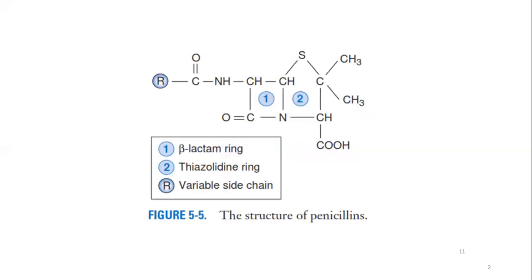This is the structure of penicillin. It consists of two rings: the first is the beta-lactam ring and the second is the thiazolidine ring. The R chain is basically the variable side chain. This chain is modified by microbiologists and scientists, and because of this modification they give different varieties of activities to the penicillins. With respect to this R group, the penicillins are divided into five to six groups — the first being penicillin G and penicillin V, and the second being the antistaphylococcal penicillins.